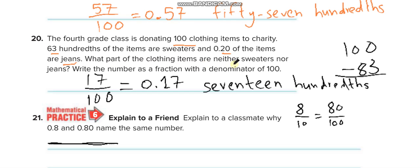If you add both of them, sweater and jeans, 63 and 20, which is 83, and the remaining are neither jeans nor sweater. So 100 minus 83 is 17, so 17 over 100, 0.17, 17 hundredths.